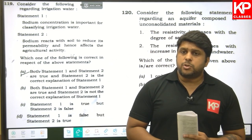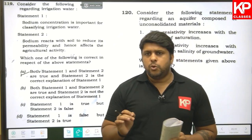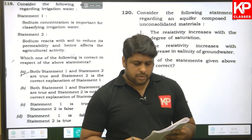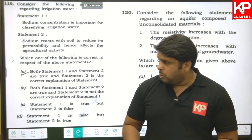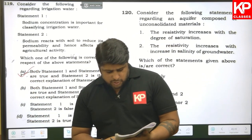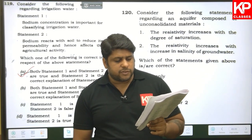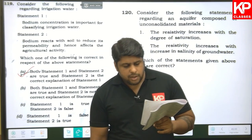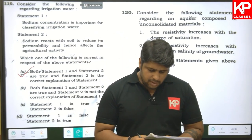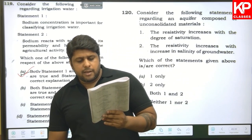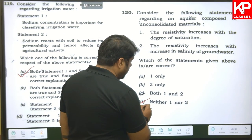Question one hundred and twenty: regarding irrigation waters — sodium concentration is important for classifying irrigation water because increasing sodium reacts with soil and reduces its permeability (correct). Sodium reacts with soil to reduce its permeability (correct). Both statements are true — A is the answer. Question one hundred and twenty-one: regarding an aquifer of unconsolidated material — resistivity increases with degree of saturation (wrong — resistivity decreases as saturation increases conductivity); resistivity increases with salinity of groundwater (also wrong — more salinity means higher conductivity, lower resistivity). Both are wrong, so D is the right answer.